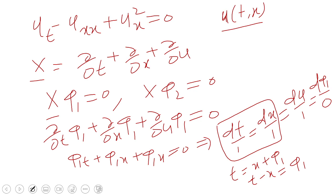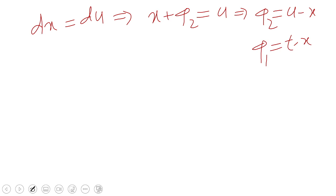Similarly, if we take these two on the next slide, DX is equal to DU. That will give me X plus phi 2, so pi 2 which is an integration constant equal to U. So this gives me phi 2 is equal to U minus X. So we find two invariants, phi 1 which is T minus X and phi 2 which is U minus X.